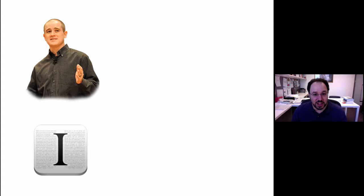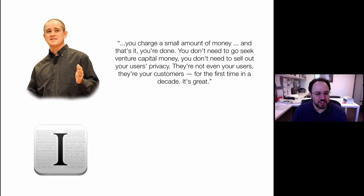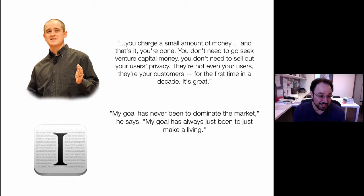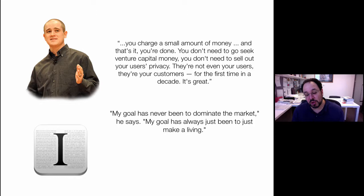An example of the execution strategy is Marco Arment, co-founder of Tumblr, who also invented Instapaper. His strategy was: charge a small amount of money, don't seek venture capital, don't sell out your users' privacy — they are your customers. His goal was never to dominate the market, just to make a living. Instapaper lets you click on something and save a very readable version of a web article to read later — a great service. He wasn't trying to become a content manager or advertiser; it was straight out: I have a product and I sell it to consumers. He eventually tired of it and moved to a podcasting app, selling Instapaper to BetaWorks, but essentially pursuing the same execution strategy.